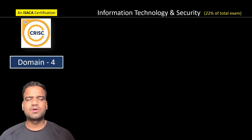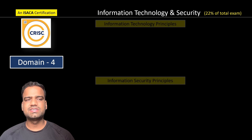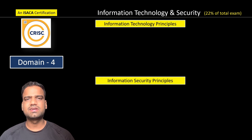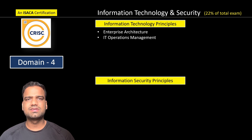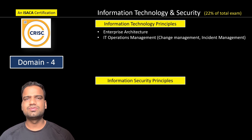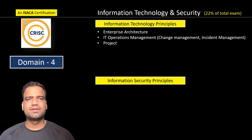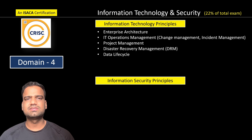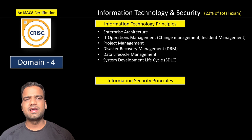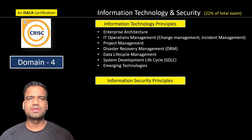Domain four is about information technology and security — IT principles and information security principles. IT principles cover enterprise architecture, IT operations management including change management, IT assets, problem and incident management, project management and risk in projects, disaster recovery management, data life cycle management, system development life cycle, and emerging technologies like IoT, artificial intelligence, and quantum computing.